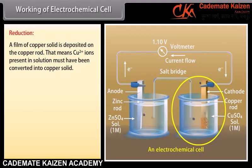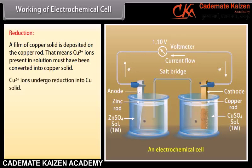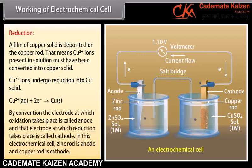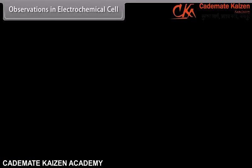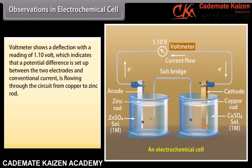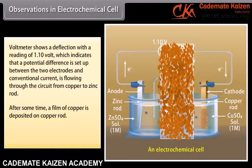Electrochemical cell: A device in which chemical energy is converted into electrical energy is called an electrochemical cell, or a galvanic cell, or a voltaic cell. In an electrochemical cell, a spontaneous redox reaction is carried out in an indirect manner, and decrease in free energy during the spontaneous chemical process appears as electrical energy. Construction: A zinc rod is dipped in a ZnSO₄ solution and a copper rod is dipped in a CuSO₄ solution, taken into two separate beakers. Zinc and copper rods, which act as electrodes, are connected by a conducting wire through a voltmeter. The two electrolyte solutions are connected through a salt bridge — an inverted glass U-tube filled with a warm concentrated solution of some electrolyte.